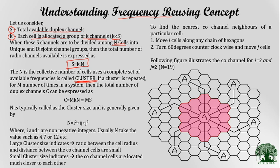The total number of duplex channels C can be expressed as C = M × K × N. Since K × N = S, we can substitute to get C = M × S. The value of N cannot be any random number; it is given by the formula N = i² + i·j + j², where i and j are non-negative integers. This means N can take values such as 4, 7, 12, etc. If the cluster size goes very large, the ratio between the cell radius and the distance between co-channel cells becomes very small. If the cluster size goes very small, the co-channel cells are much closer to each other, so the distance decreases and interference increases.